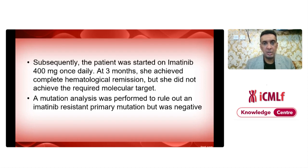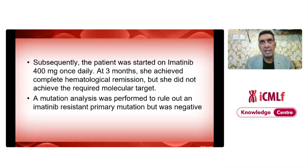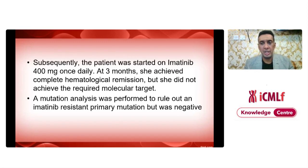At three months, the patient achieved complete hematological remission, but she didn't achieve cytogenetic and molecular targets. Going to the guidelines, there are no specific recommendations for treating class 3 obesity patients, and strictly following guidelines would call this a failure, suggesting a switch to second-generation tyrosine kinase inhibitors. Because such patients exist in the real world, a different approach was needed.